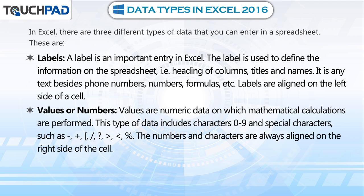Values or Numbers. Values are numeric data on which mathematical calculations are performed. This type of data includes characters 0 to 9 and special characters such as minus, plus, bracket, slash, question mark, more than, less than, and percentage. The numbers and characters are always aligned on the right side of the cell.